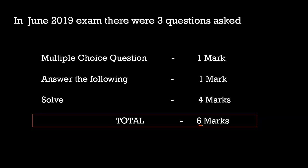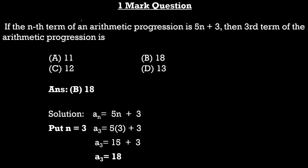First we will see the one-mark question. It's a multiple choice question: if the nth term of an arithmetic progression is 5n + 3, then the third term of the arithmetic progression is — options: A) 11, B) 18, C) 12, D) 13. The answer is B) 18.